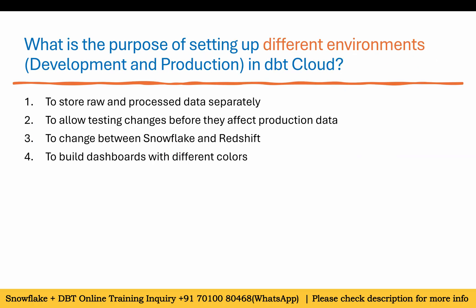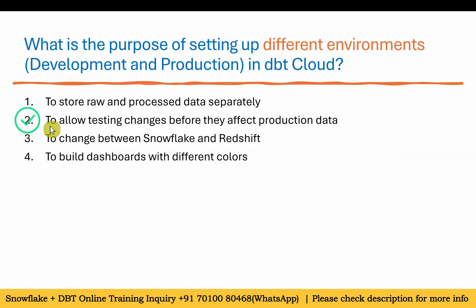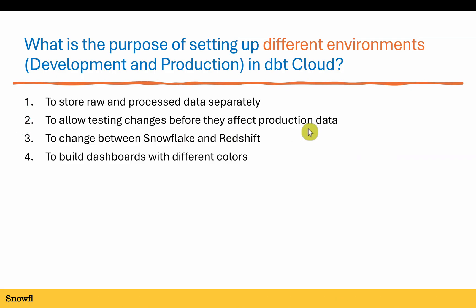What is the purpose of setting up different environments like development and production in DBT Cloud? We set up two environments today — development and production. Options include storing raw and processed data separately, allowing testing before changes affect production data, switching between Snowflake and Redshift, or building dashboards. The answer is two: to allow testing changes before they affect production data.